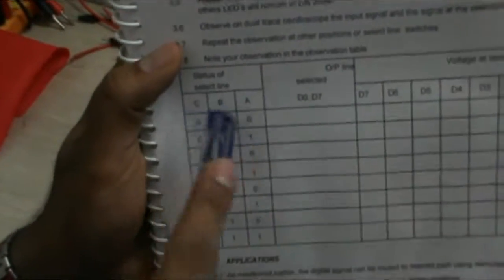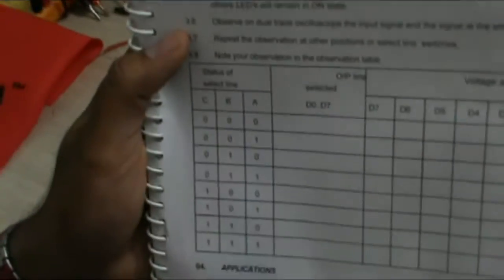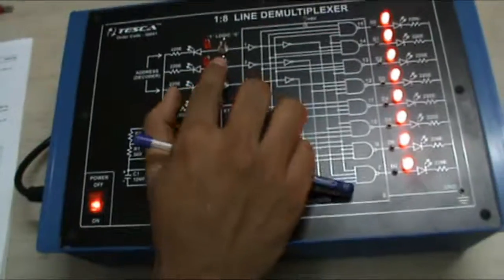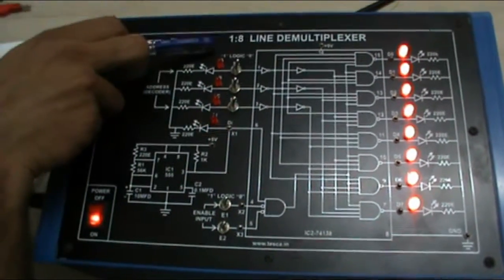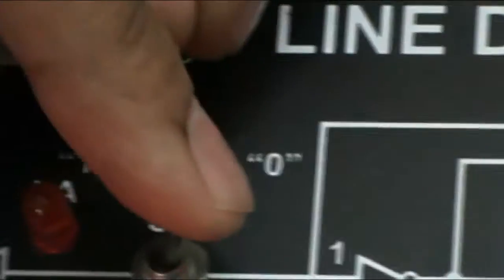We have to give inputs according to this table A, B, and C as SA, SB, and SC. 0 0 0 to 1 1 1 means 0 to 7. According to this table, this is the logic 0 and this is the logic 1. This switch is at logic 1 and now it is at logic 0.